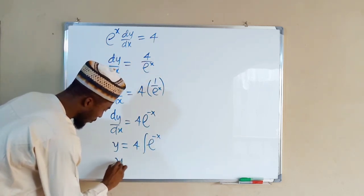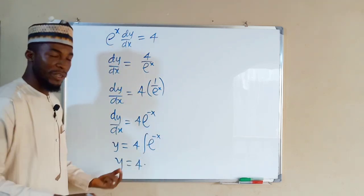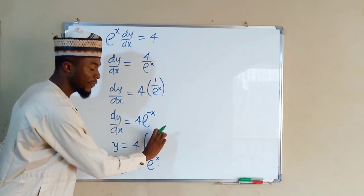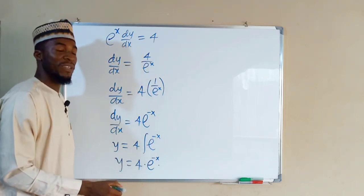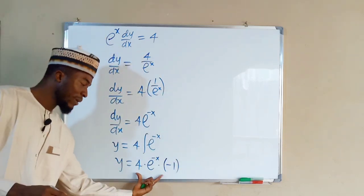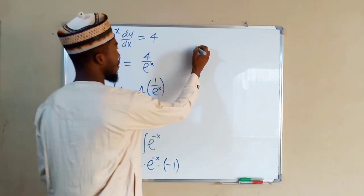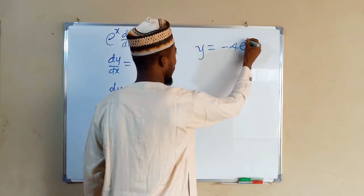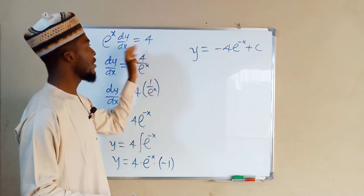From the left-hand side we have y. On the right-hand side, the integral of e to the power of a function is the same exponential function divided by the derivative of the exponent. Differentiating negative x gives negative one, so we multiply by negative one, giving negative four e to the negative x. Therefore, y equals negative four e to the negative x plus the constant of integration c. This is the general solution for this differential equation.